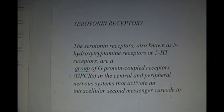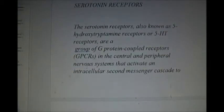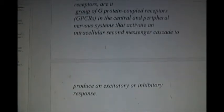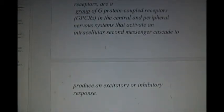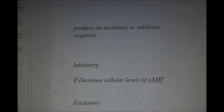The serotonin receptors. Serotonin receptors also known as 5-HT receptors are a group of G-protein coupled receptors in the central and the peripheral nervous system that activate an intracellular second messenger cascade to produce an excitatory or inhibitory response.